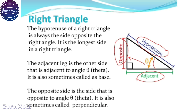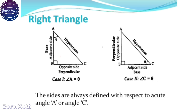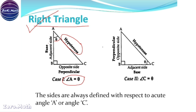Now let's understand how we use this right-angle triangle to find the trigonometric ratios. A right-angle triangle is also simply called a right triangle. Case number one: let us take angle A to be theta. When A is taken to be angle theta, the hypotenuse is the longest side, which is AC. The base is the side adjacent to theta, which is AB. And the opposite side, which is BC, is called the perpendicular because it's opposite to angle theta.